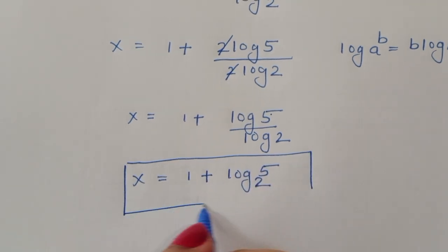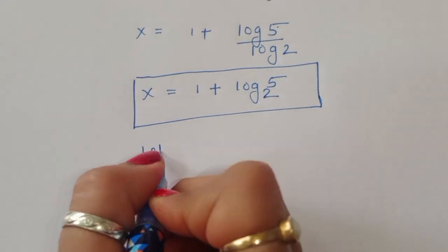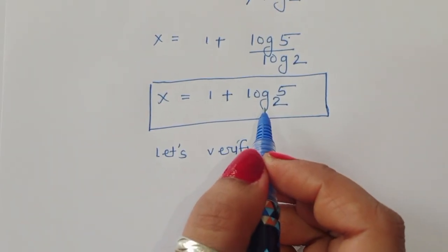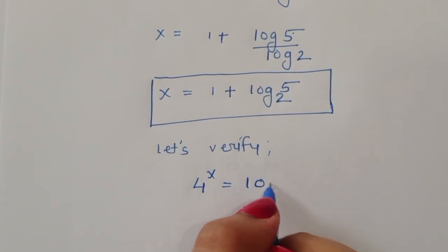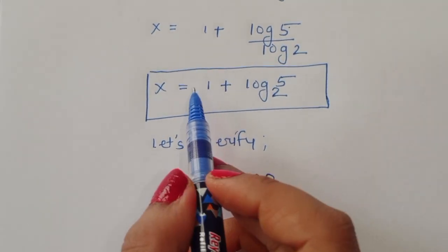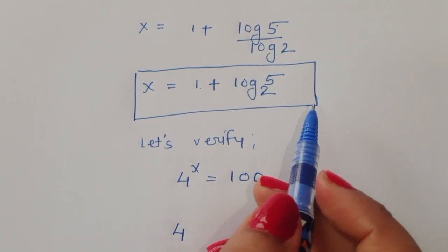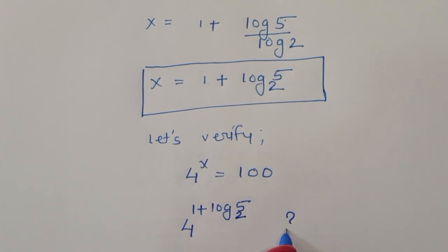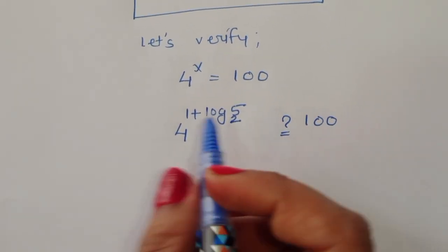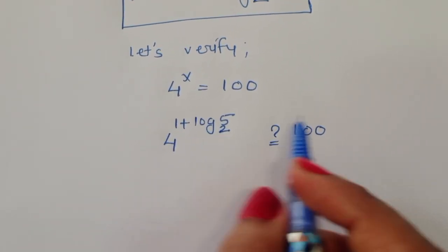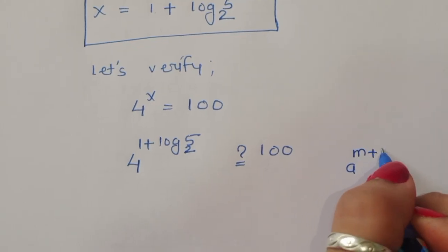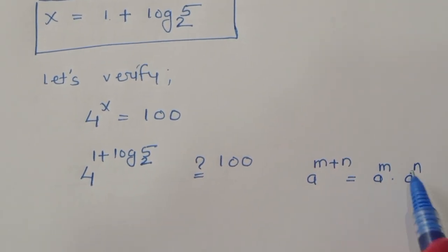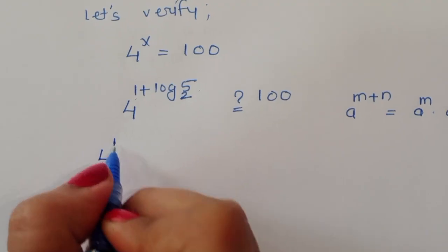So log of 5 to the base 2 — this is the value of x. This is the solution. Now let's verify whether this is correct. The value of x is 1 plus log of 5 to the base 2. The original question is 4 power x equals 100. So 4 power (1 plus log of 5 to the base 2). Using the formula a power (m plus n) equals a power m times a power n, we can write this as 4 power 1 times 4 power log of 5 to the base 2.